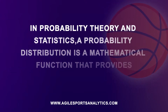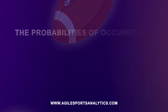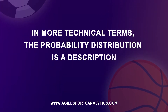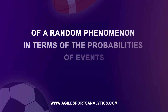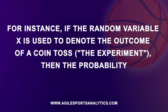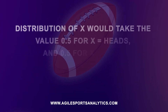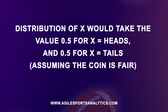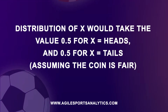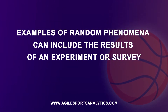In probability theory and statistics, a probability distribution is a mathematical function that provides the probabilities of occurrence of different possible outcomes in an experiment. In more technical terms, the probability distribution is a description of a random phenomenon in terms of the probabilities of events. For instance, if the random variable x is used to denote the outcome of a coin toss, the probability distribution of x would take the value of .5 for x equals heads, and .5 for x equals tails, assuming the coin is fair. Examples of random phenomena can include the results of an experiment or survey.